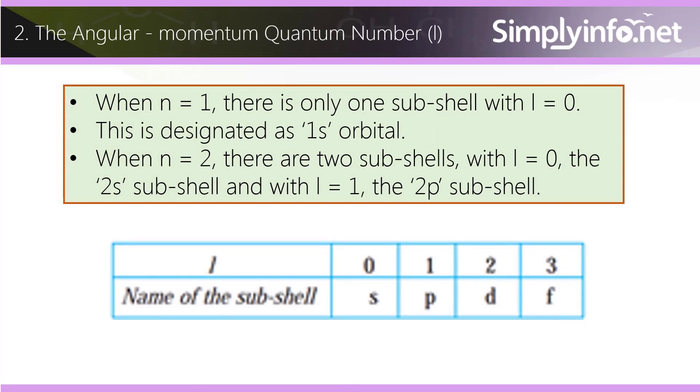When n equals 1, there is only one subshell with l equals 0. This is designated as 1s orbital. When n equals 2, there are two subshells: with l equals 0, the 2s subshell, and with l equals 1, the 2p subshell.